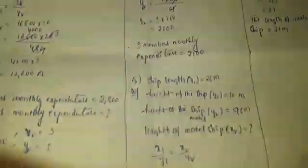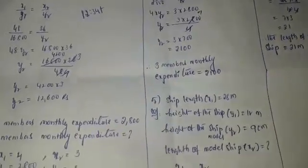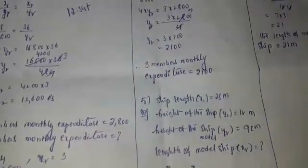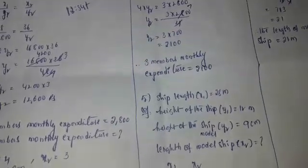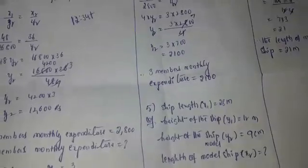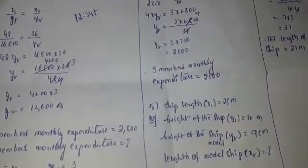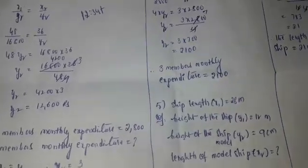Okay dear eighth class students, second video. I will explain the question, question number five. In a ship of length 28 meters, height of its mast is 12 meters. If the height of the mast in its model is 9 centimeters...